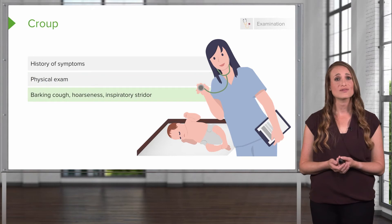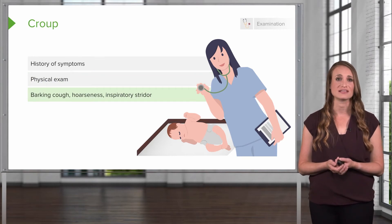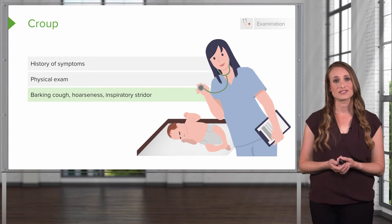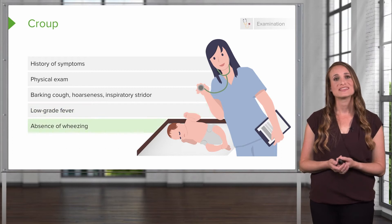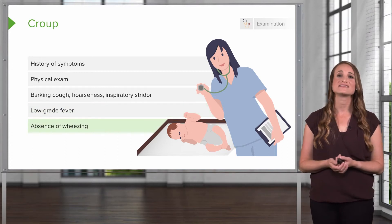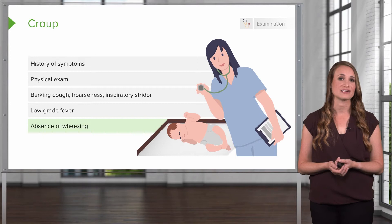The child will also have usually a barking cough during the visit and have a hoarse voice and some inspiratory stridor. The child may have a low-grade fever. And typically with croup, there's an absence of wheezing. This is different than children with asthma or a reactive airway.